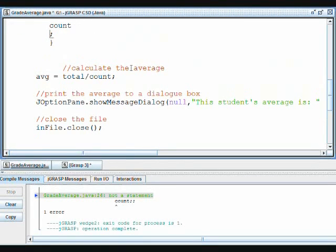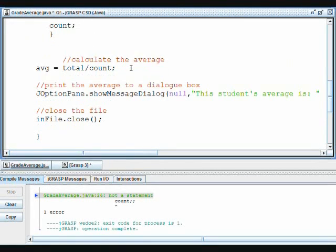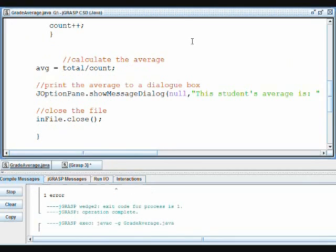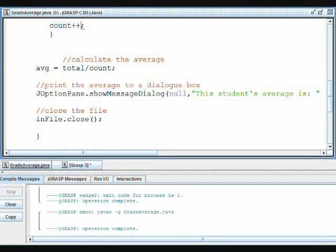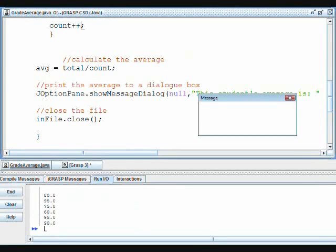Whoops, and I didn't do count plus plus. I just put semicolon semicolon. Okay, count plus plus. And we'll compile again. And now we'll run it. And it gives us the correct average, so it works.